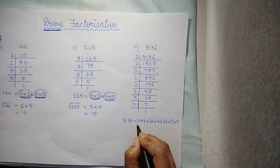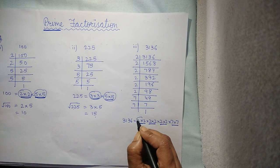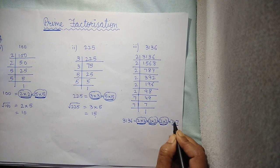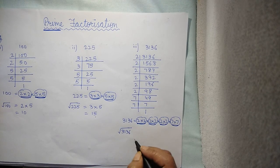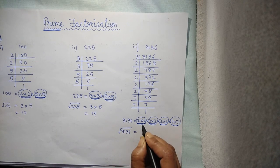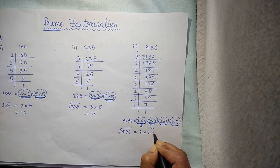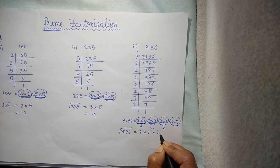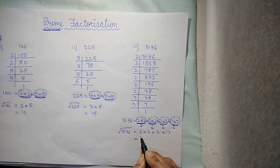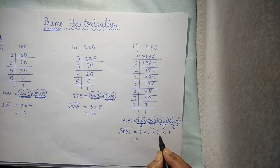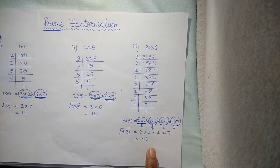What you have to do now? Make the pairs of same numbers together. Out of these pairs, you will write it only once. So, square root of 3136 is 2 multiply 2 multiply 2 multiply 7. What result you will get? 2 into 2 into 2 is 8 into 7, 56. So, square root of 3136 is 56.